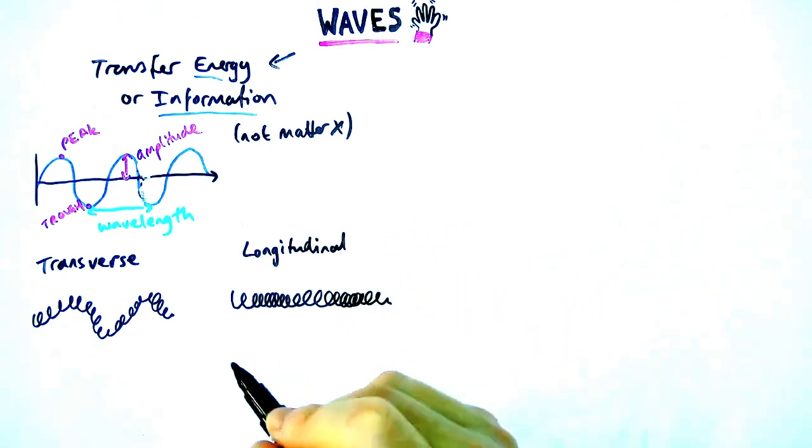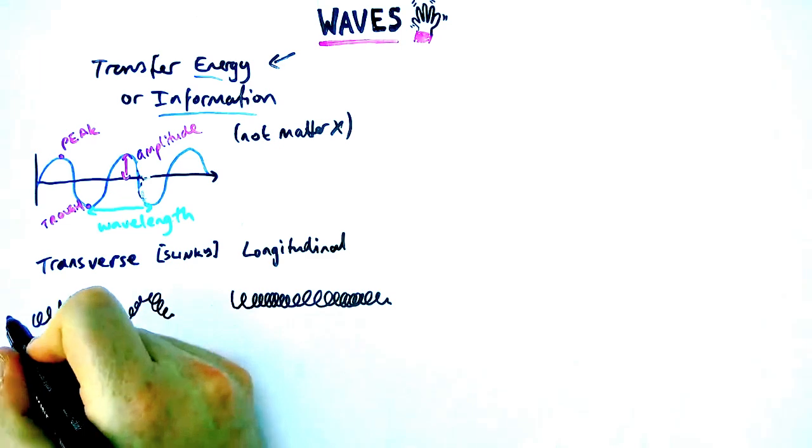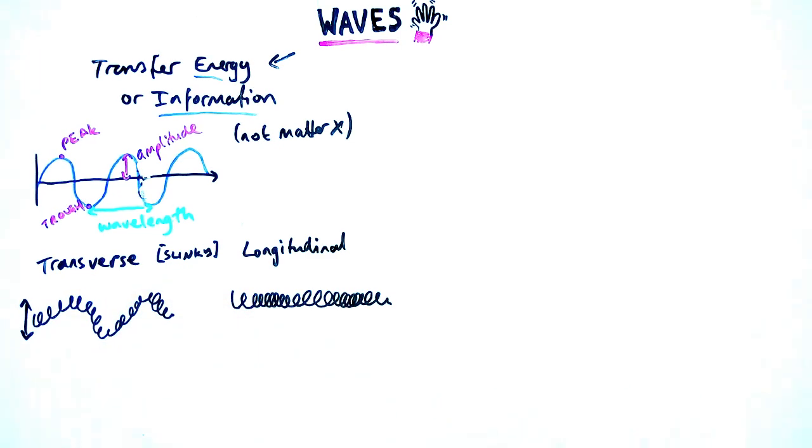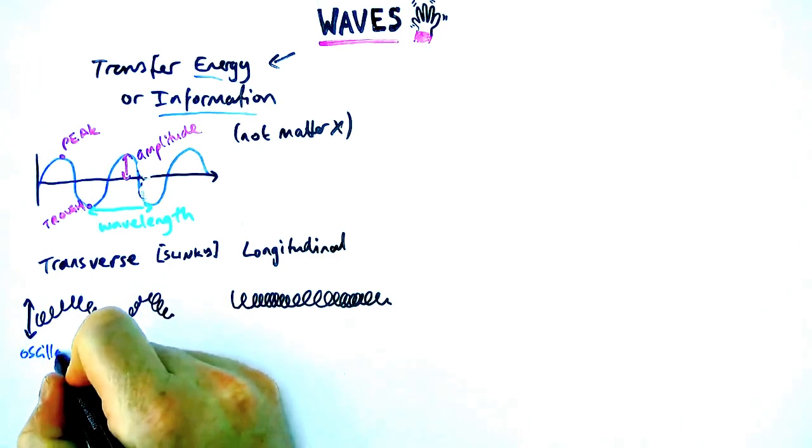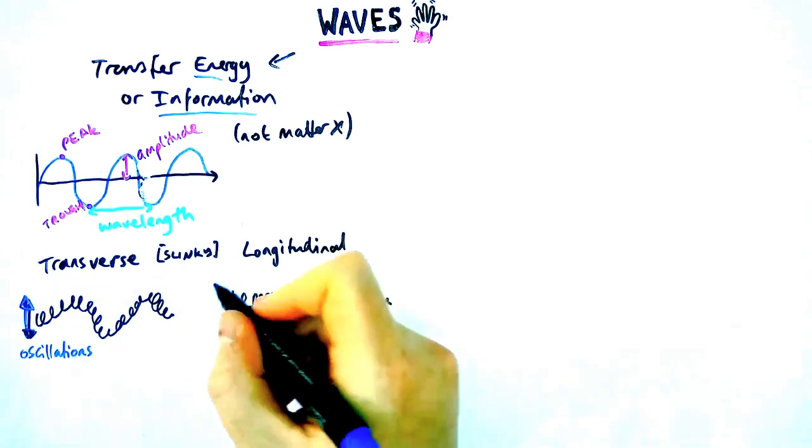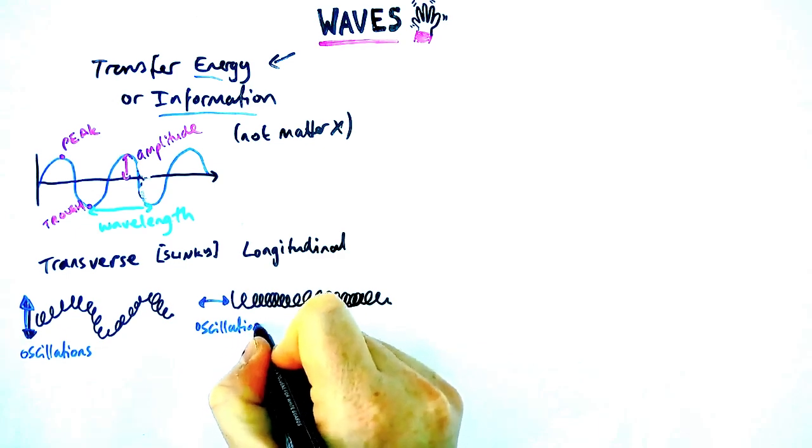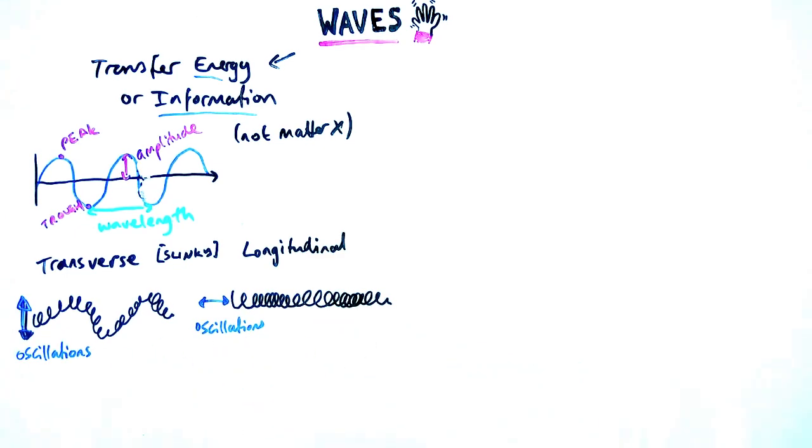In a transverse wave on a slinky, it's really important to note that the oscillations that cause it go up and down and the wave is moving left to right. So what we say then for these oscillations, opposed to longitudinal waves, which are traveling in the same direction that the wave is moving in, kind of being pushed along left to right and the wave is moving left to right.